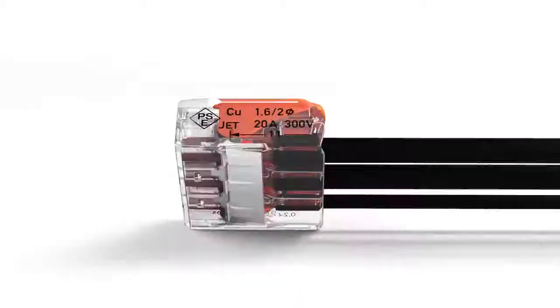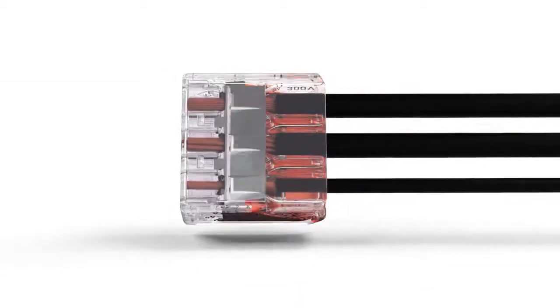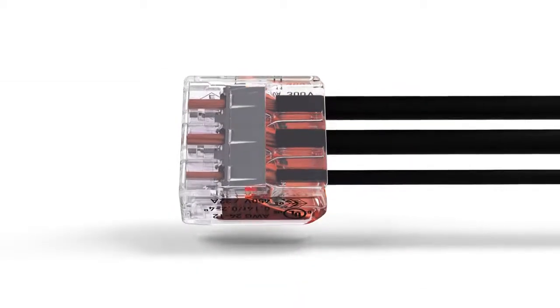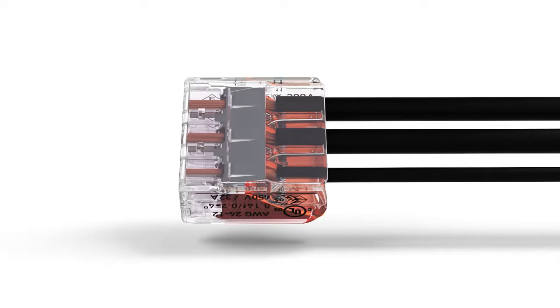The transparent housing enables visual inspection of the correct conductor position, providing a clear view of conductors that have not been inserted far enough or that have not been stripped to the proper length.